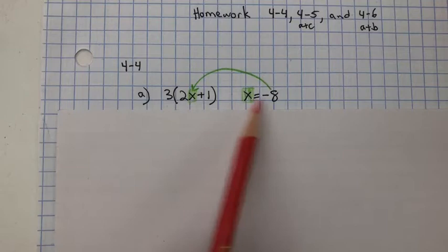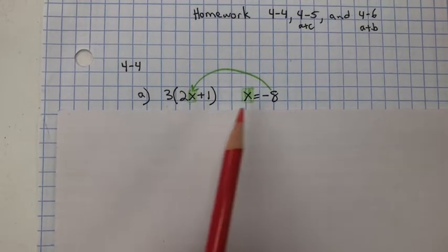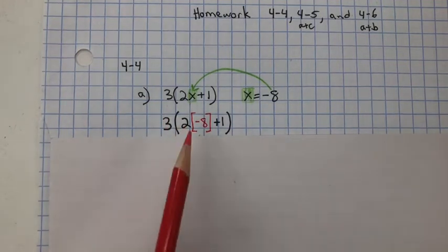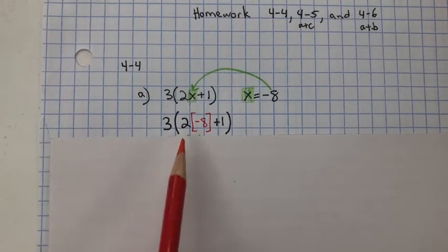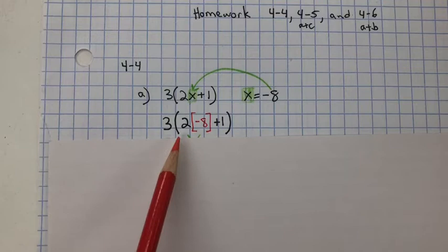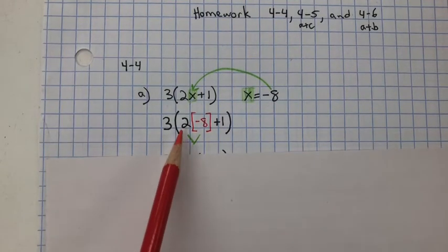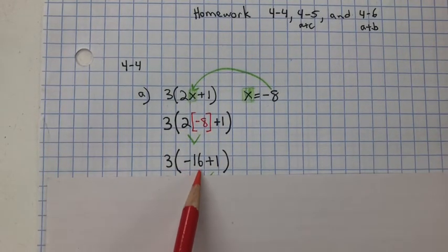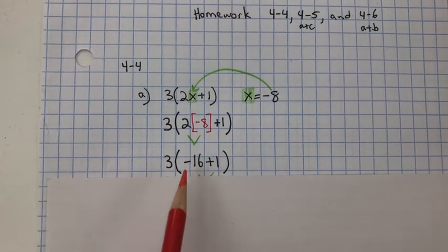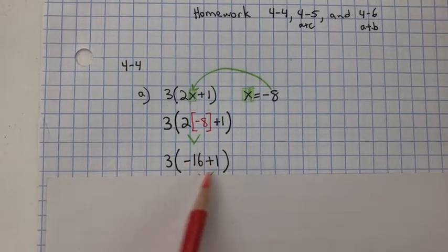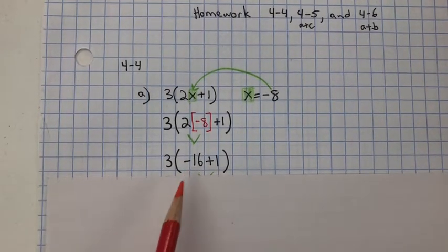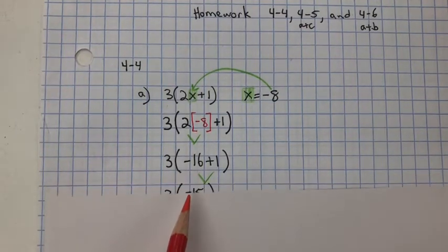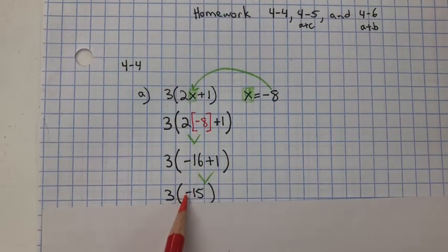So we're going to substitute x with the value of negative 8. Instead of x, we have the value of negative 8, and we're going to follow the order of operations. We need to do what's inside the grouping symbols — the parentheses — and we have 2 multiplied by negative 8, which is negative 16. We can still simplify in the parentheses, so negative 16 plus 1. We have more negatives than positives, so we know it's going to be a negative number, and we have negative 15.